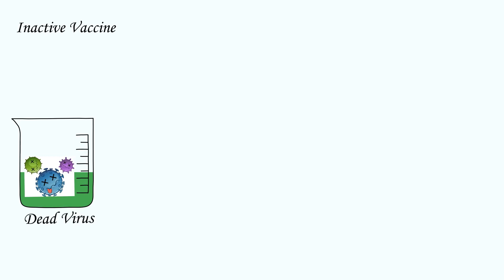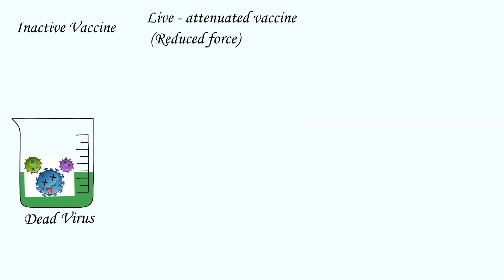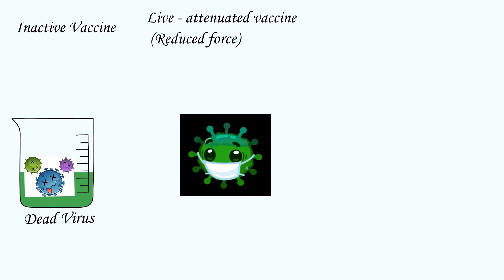Next is live attenuated vaccine. It contains an active virus, yes you heard it right, but a weaker form of the virus that causes disease. Because these vaccines are so similar to the natural infection, they create a strong, long-lasting immune response.